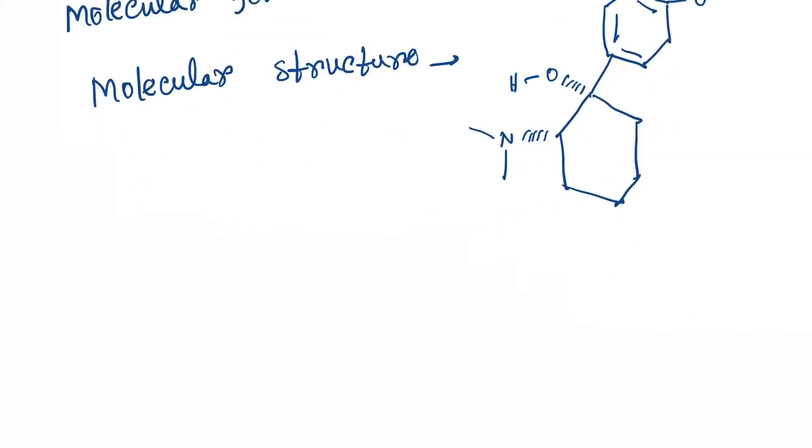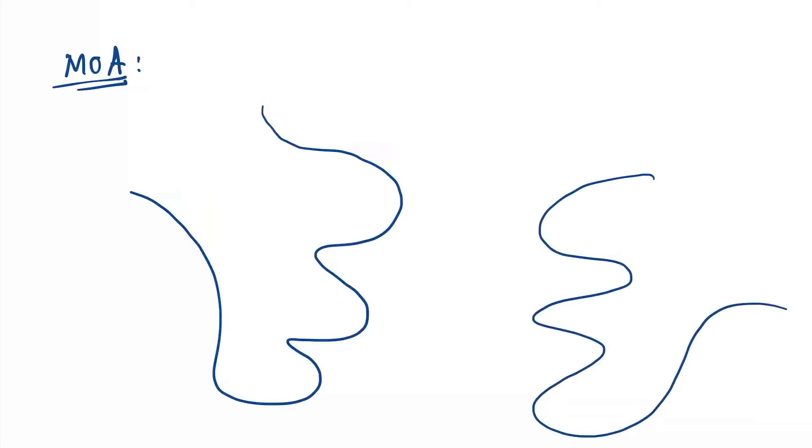So this is the molecular structure. Now let's learn the mechanism of action. Let's understand: we have a presynaptic neuron and a postsynaptic neuron.